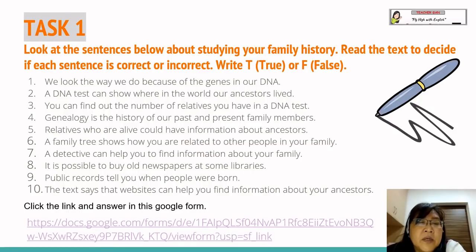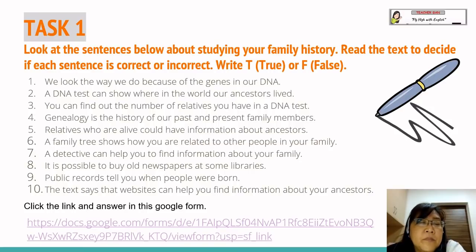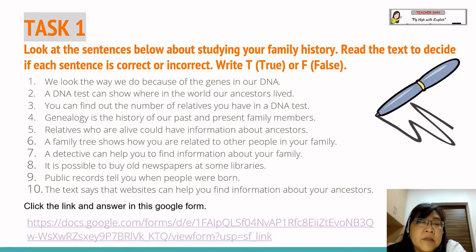Number five: Relatives who are alive could have information about ancestors. Number six: A family tree shows how you are related to other people in your family. Number seven: A detective can help you find information about your family. Number eight: It is possible to buy old newspapers at some libraries. Number nine: Public records tell you when people were born. Number ten: The text says that websites can help you find information about your ancestors. You have to decide whether each statement is true or false.